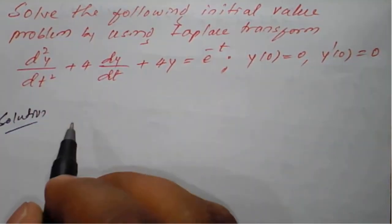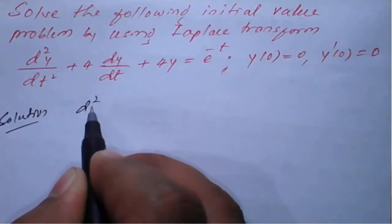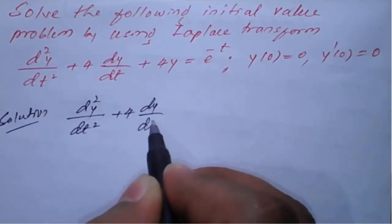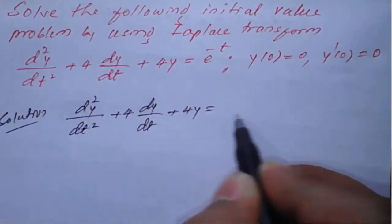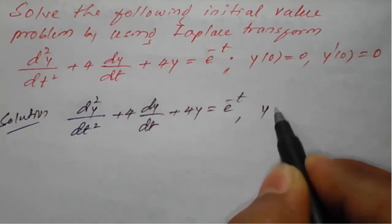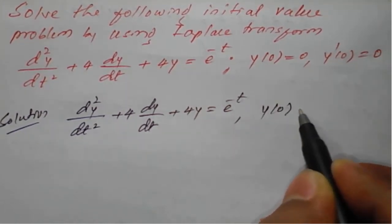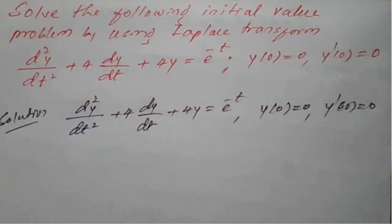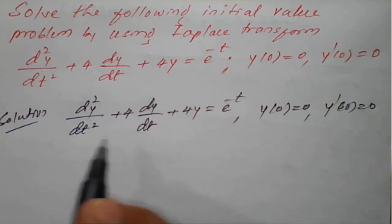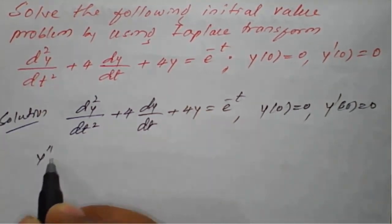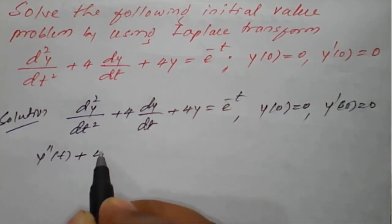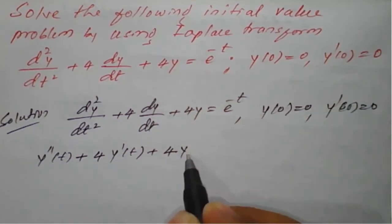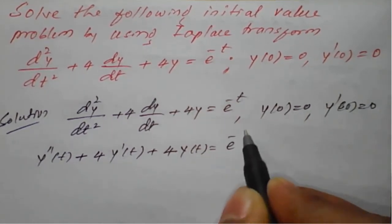The given differential equation is d²y/dt² plus 4(dy/dt) plus 4y equals e^(−t), and the initial conditions are y(0) = 0 and y'(0) = 0. This will be converted symbolically as y''(t) plus 4·y'(t) plus 4·y(t) equals e^(−t).